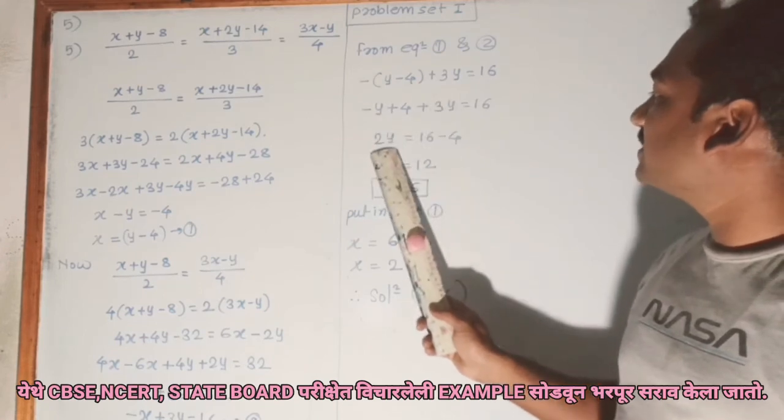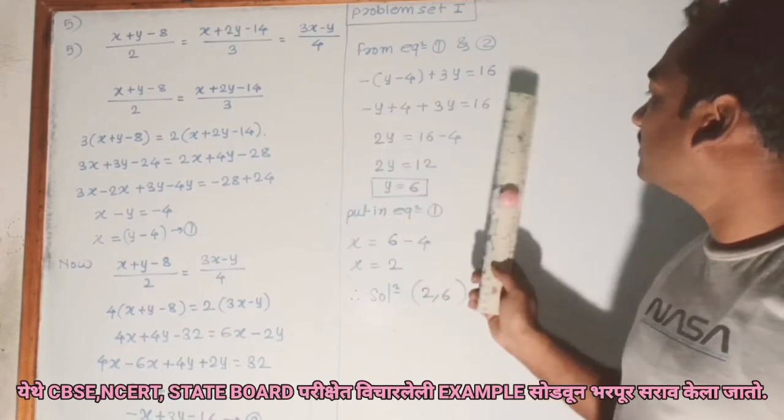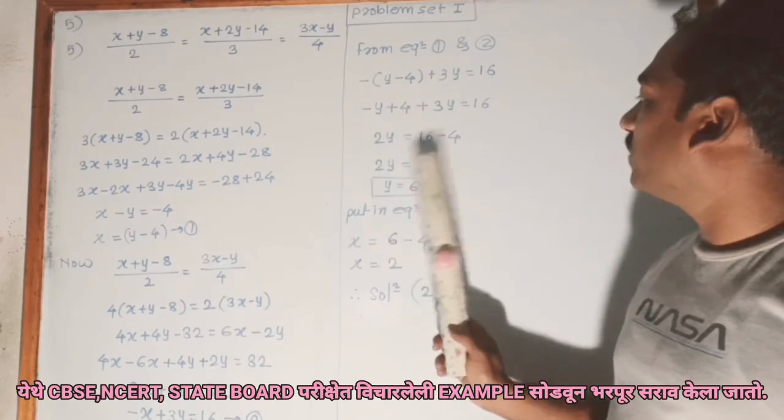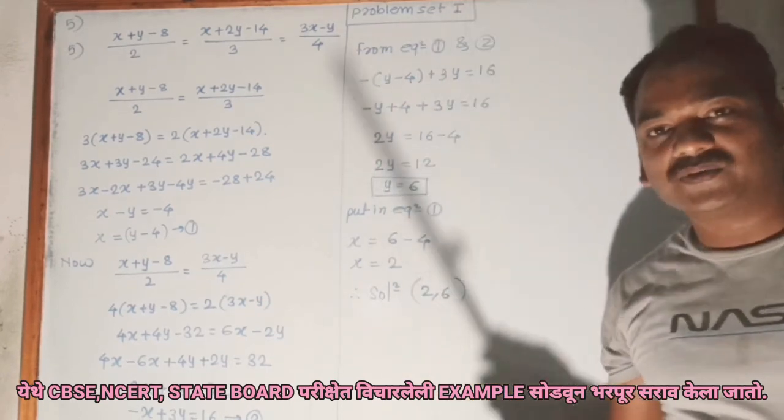This gives 2y. With the constants, 16 minus 4 equals 12. So 2y = 12, which means y = 6.